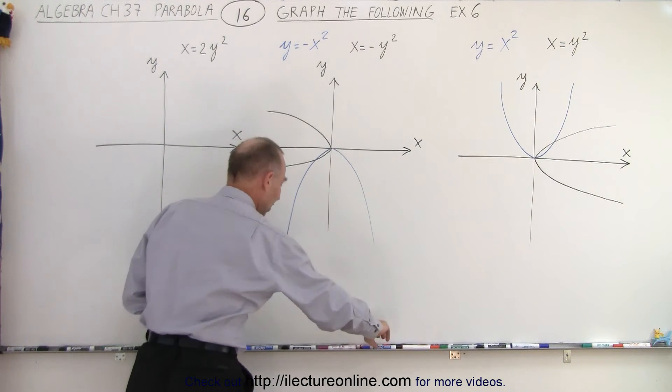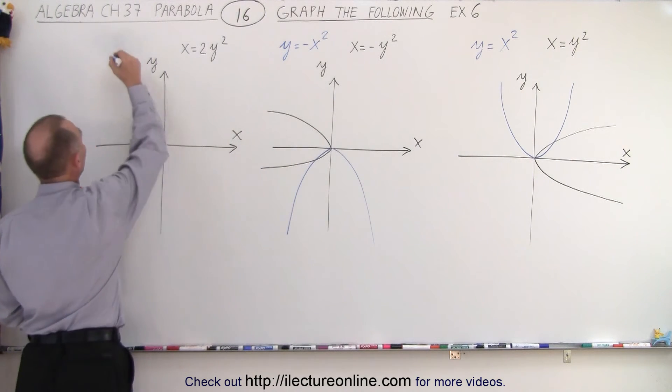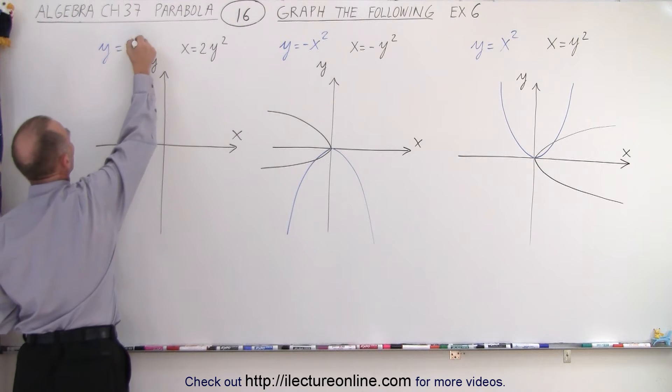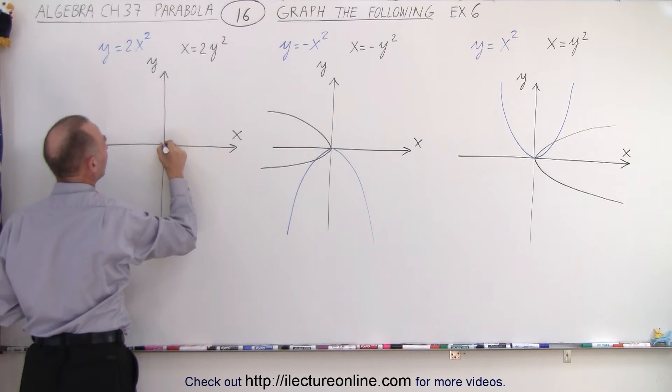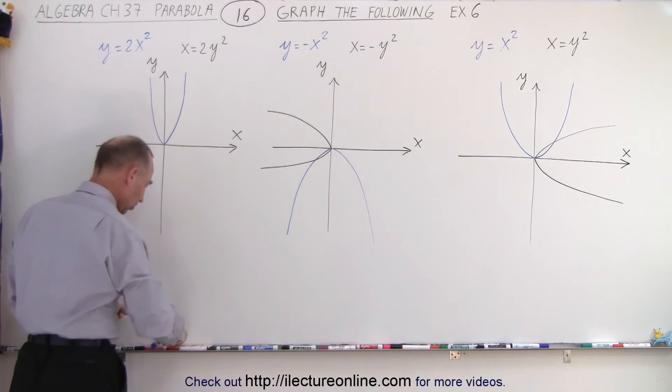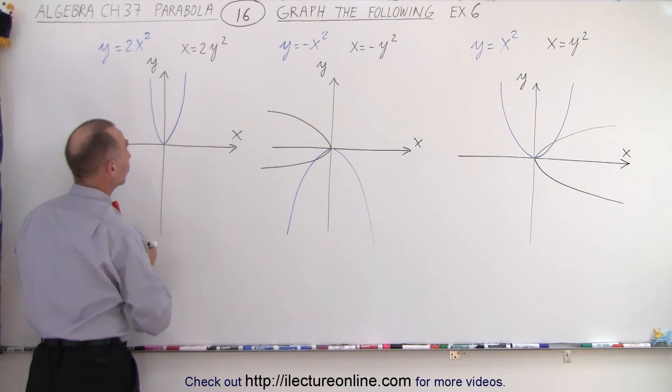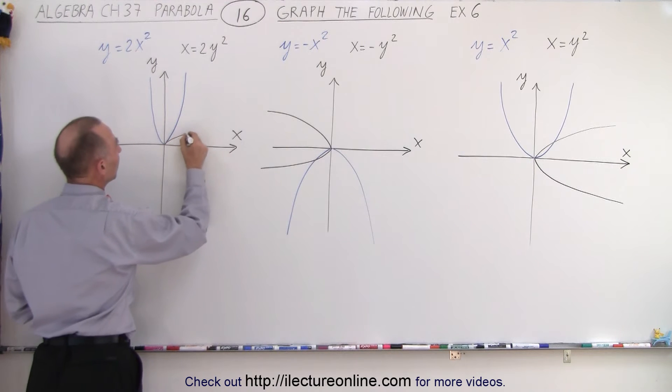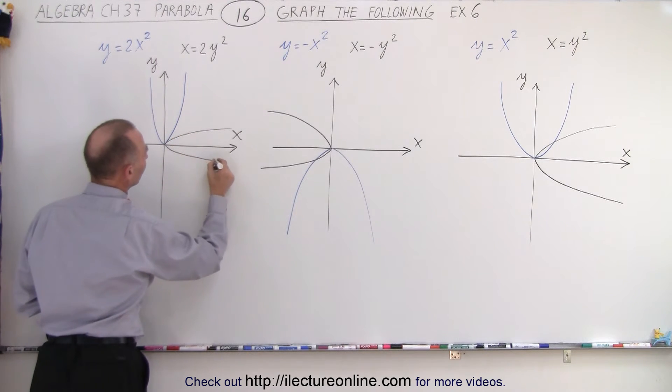But again, for comparison's sake, we'll do the same. Over here we have y equals 2x squared. So we know that would be a much skinnier parabola that would look like this. And in the same fashion, when we draw the x equals 2y squared, we'll get something that looks a lot skinnier and looks like this.